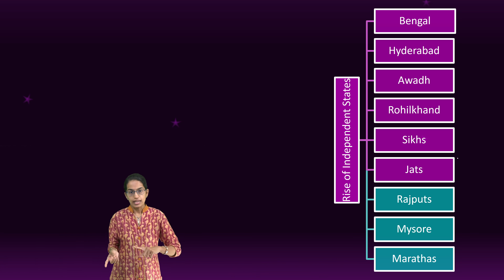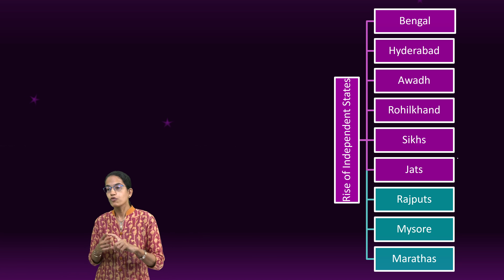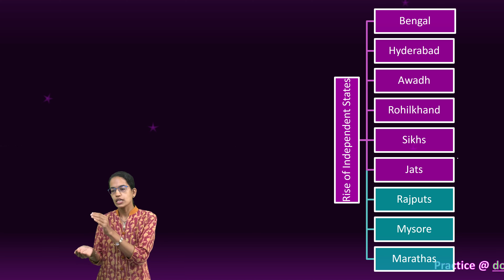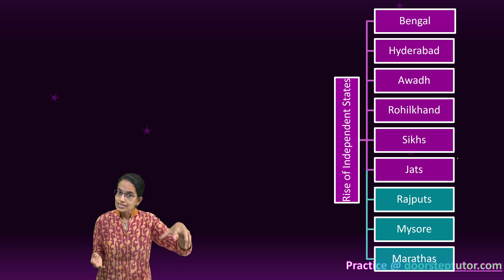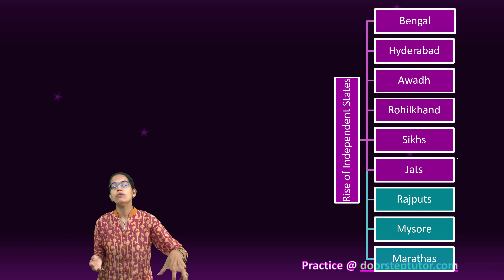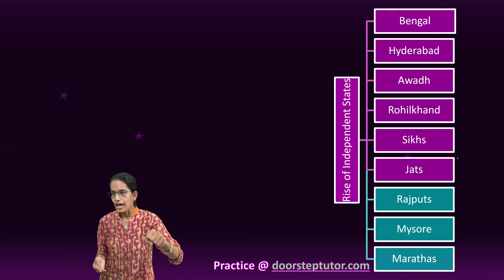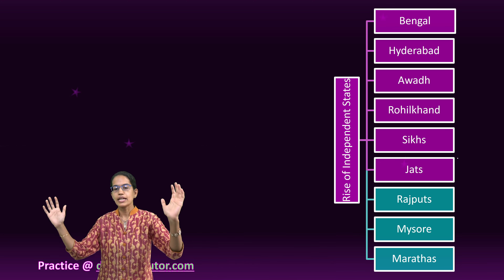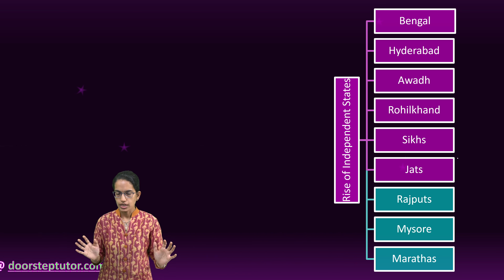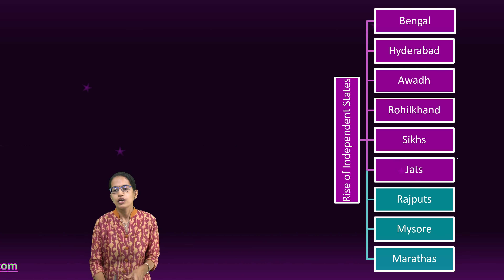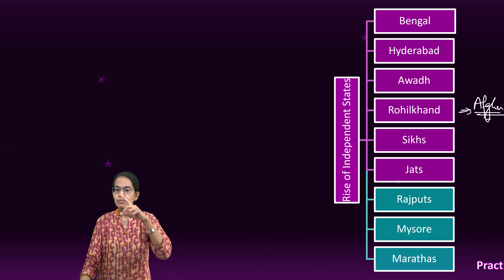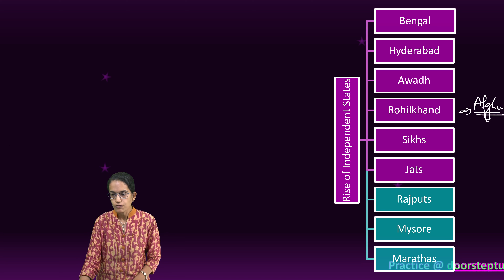When Nadir Shah was invading, the leader of the Rohilas, Ali Muhammad Khan, established firm control in Rohilkhand. As a result, he established his own separate independent state of Rohilkhand. Very important to note: Rohilkhand was a state led by Afghan tribes, mainly in the Moradabad and Bareilly area of Uttar Pradesh.